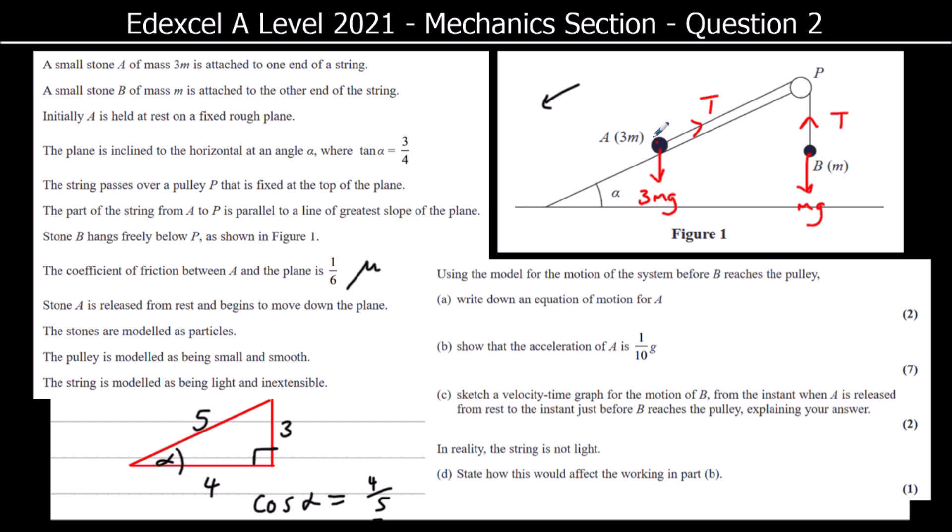We've got the normal reaction which is perpendicular to the plane, and we've also got friction. Friction is opposing the motion, so it's going in this direction, and it's taking its maximum value. Because it's moving, friction takes its maximum value, which is mu r, or 1 sixth times r.